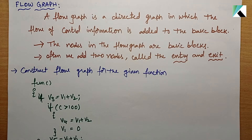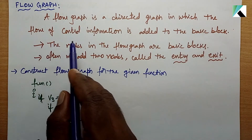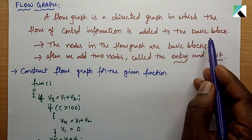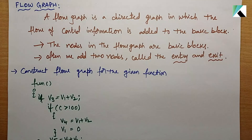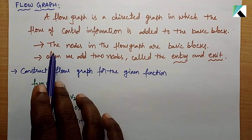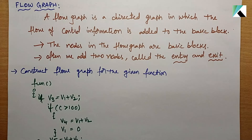Let's look at the example of a flow graph. A flow graph is a directed graph in which the flow of control information is added to the basic block. It is based on the flow of control. The nodes in the flow graph are basic blocks.